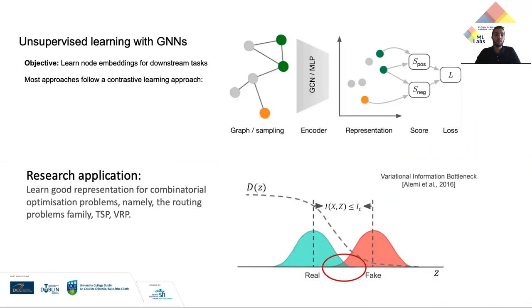However, getting graph-labeled, well-annotated data is costly in many cases, even intractable in some cases. So learning good quality representations without any supervised signal is highly valuable for downstream tasks in the context of graphs.